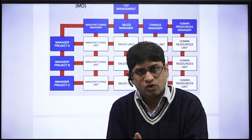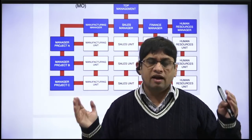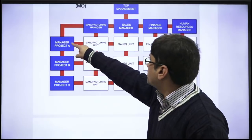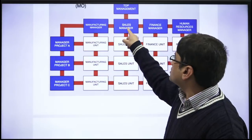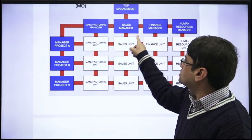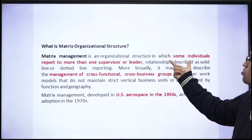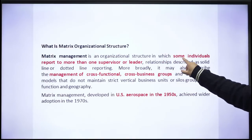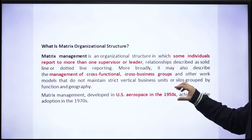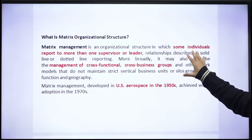In a matrix organization structure, an employee reports to more than one manager. There is a project manager handling the project, and the employee reports to the project manager as well as the functional manager — for example, the manufacturing manager. The project manager takes ten people for the project. If project A requires an employee from the sales department, the project manager will ask the sales manager to send that employee, so the employee reports to both the sales manager and the project manager.